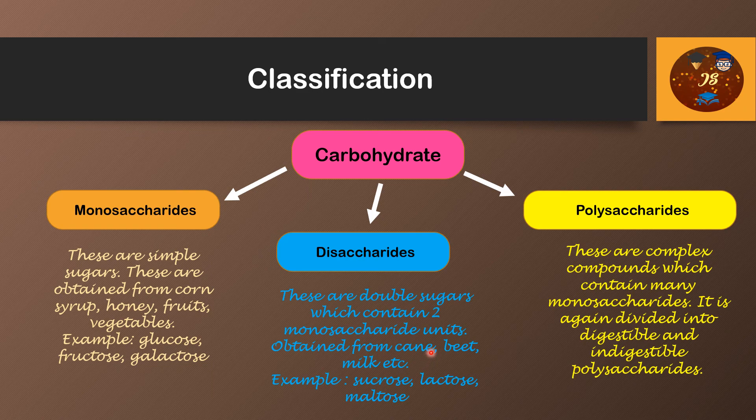Please go through the examples very carefully. Polysaccharides are complex compounds which contain many monosaccharides. They are further subdivided, so let's see the further subdivisions of polysaccharides.